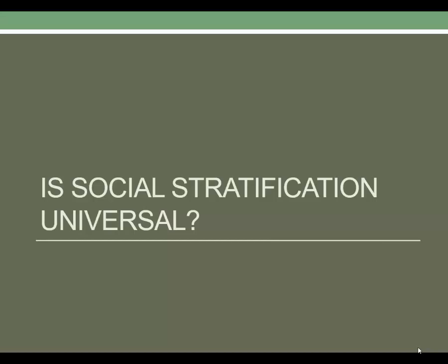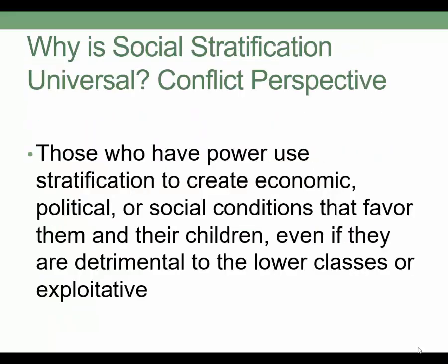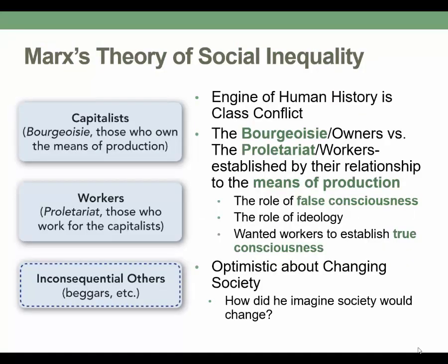Karl Marx defined social class differently than Weber. He split society primarily into two groups: the bourgeoisie — the capitalist owners who owned the means of production, essentially factory owners at the time he was writing — and the proletariat, the workers who had to work for wages because they did not own the means of production. He felt that the relationship between these two groups, which he called class conflict, was what would drive societal development.